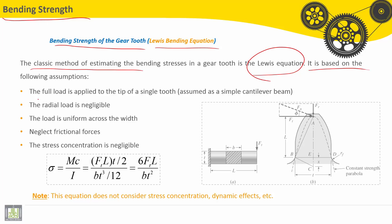It is based on the following assumptions. First, the full load is applied to the tip of a single tooth, assumed to be a simple cantilever beam. Second assumption, the radial load is negligible. Third assumption, the load is uniform across the width. Fourth assumption, neglect frictional forces. And finally, the stress concentration is negligible.